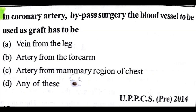First question: in coronary artery bypass surgery, the blood vessel to be used as a graft has to be — a vein from the leg, artery from the forearm, artery from the mammary region of the chest. The answer is D: any of these.